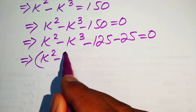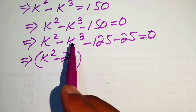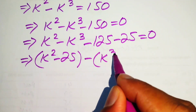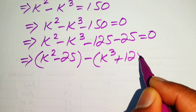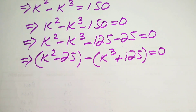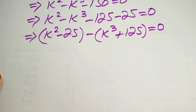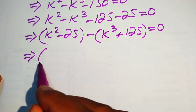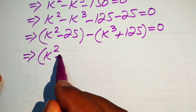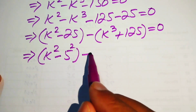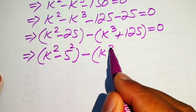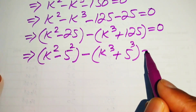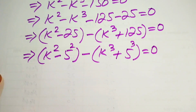We write it as k squared minus 25, then take a common minus sign from the remaining two terms to get minus(k cubed plus 125). This whole equation equals 0. We write 25 as 5 squared and 125 as 5 cubed.